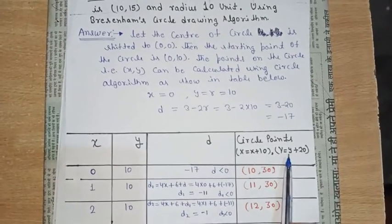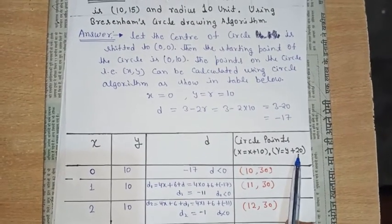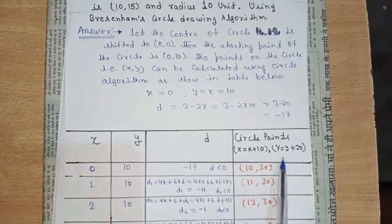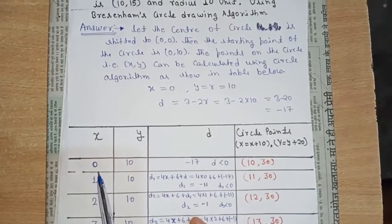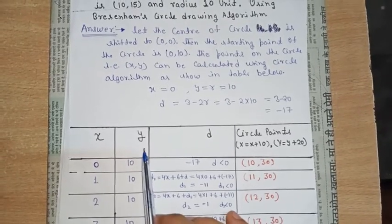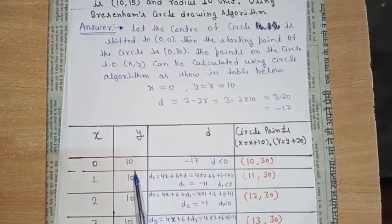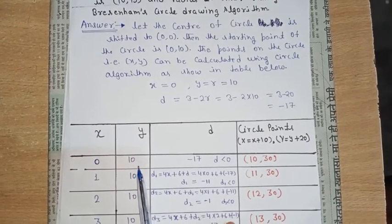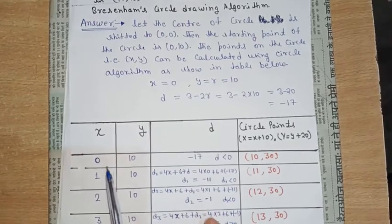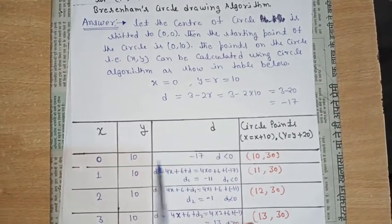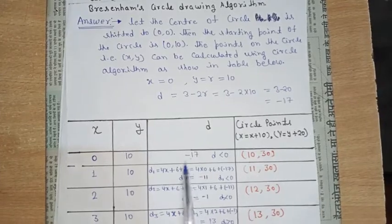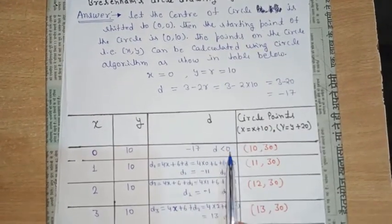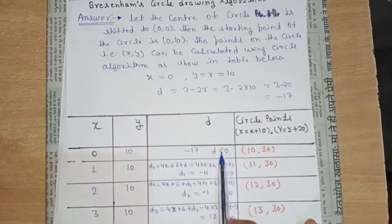The value of h is 10 and the value of k is 20, as given in the question. The starting value of x is 0 and the starting value of y is 10, as we discussed in the Bresenham circle algorithm — the starting points are (0, 10). The value of d is minus 17. We compare minus 17 with 0; it is less than 0.